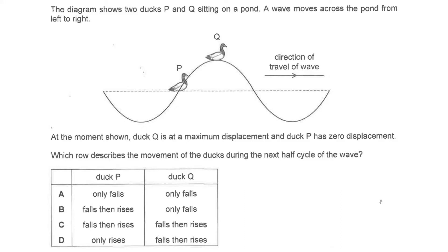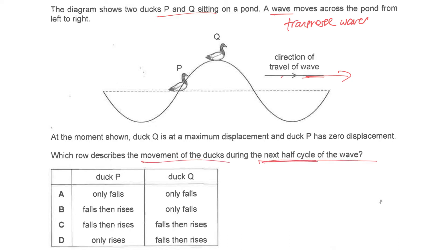In this question you have two ducks P and Q on a water wave. As you know, a water wave is a transverse wave, so the ducks will basically go up and down perpendicular to the direction of the wave. In this case the direction is to the right. This question is a bit tricky because they actually ask what is the movement of the ducks during the next half cycle of the wave.